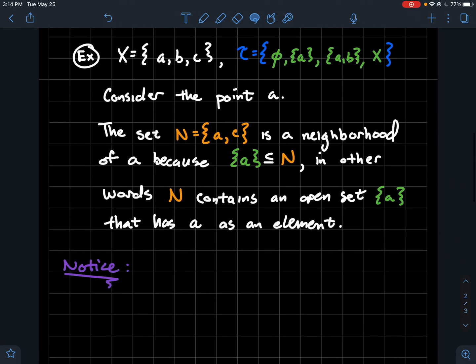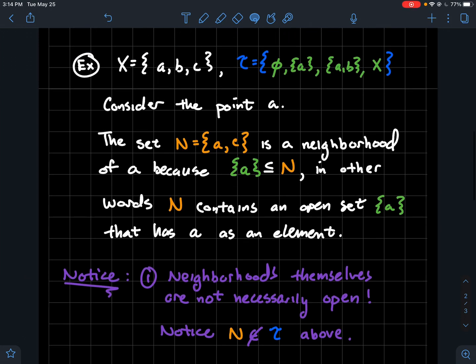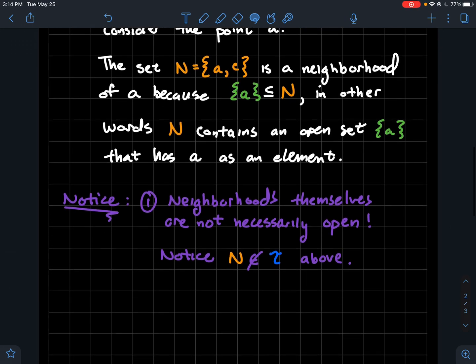So what are some things that we want to notice? There's two things that I want to notice. The first thing is that neighborhoods themselves don't necessarily have to be open. So again, the N we just saw above, {a,c} is not an element of the topology. So that's a neighborhood of a that's not open. So neighborhoods don't have to be open.